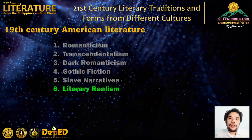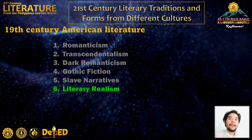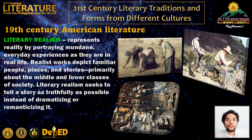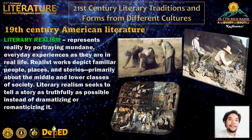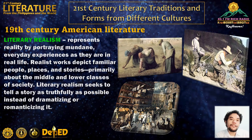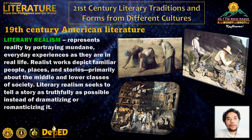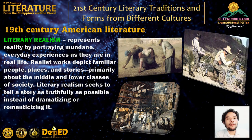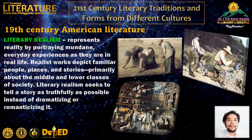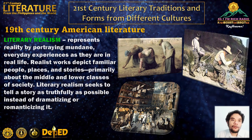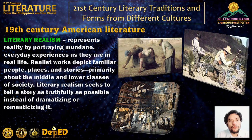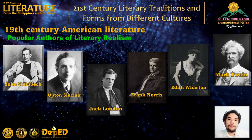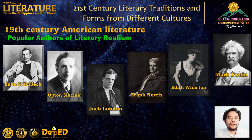Literary Realism was the last literary movement to emerge in the 19th century. It represents reality by portraying mundane, everyday experiences as they are in real life, depicting familiar people, places, and stories — primarily about the middle and lower classes of society — seeking to tell a story as truthfully as possible instead of dramatizing or romanticizing it. American realism became an important tendency in visual art. Popular authors that helped define this movement include John Steinbeck, Upton Sinclair, Jack London, Edith Wharton, Frank Norris, and Mark Twain.